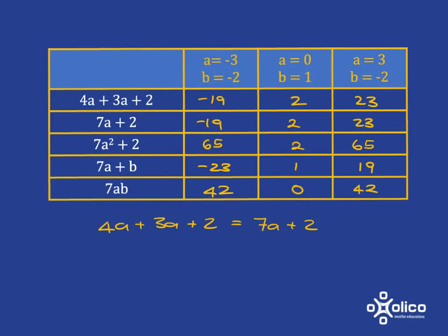Now, sometimes people get a bit confused, and when they see 4a plus 3a, they think the answer should be 7a squared. So someone might think that 7a squared plus 2 is equivalent to 4a plus 3a plus 2. But if you just substitute in some values, you'll see that substituting in negative 3, you get a very different answer here to here, and that immediately tells you that these two are not equivalent.